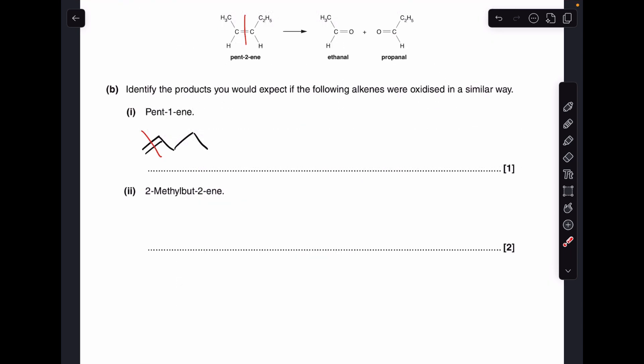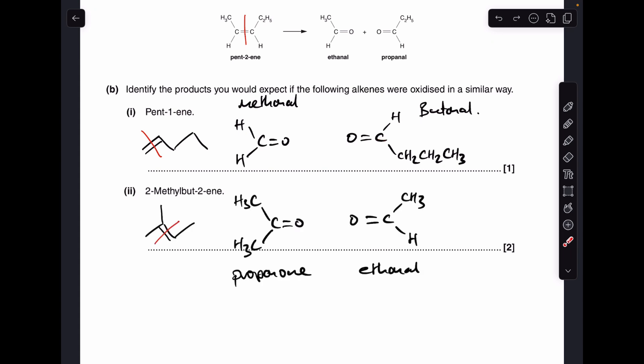Moving on to part B, so there's the information that we were given at the start of the question. I've drawn a red line through the double bond that's broken. Done the same here with pent-1-ene, which means that the products are going to be methanol and butanol. Done exactly the same thing for the 2-methylbutene, so you can see that the products are going to be propanone and ethanol.